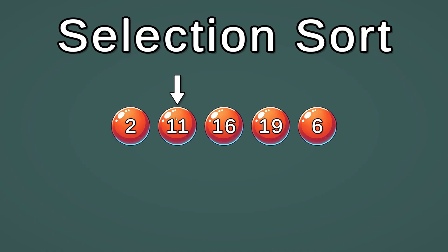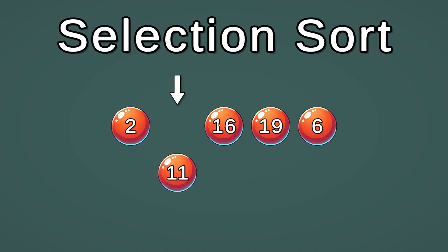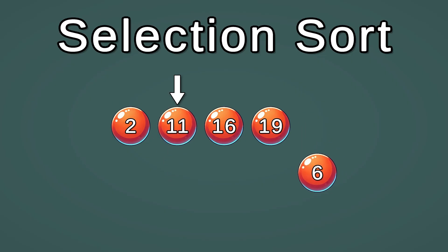Now let's go to position 2 and we're looking for the second smallest number. We start with 11 and compare it with 16 — 16 is bigger. 19 is bigger. 6 is smaller, so we select 6 as the second smallest number in the array.